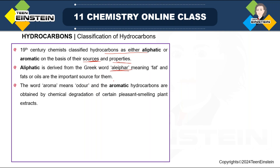Aliphatic is derived from the Greek word 'aliphar,' which means fat, and fat or oil molecules are the source for aliphatic hydrocarbons. For aromatic compounds, the word 'aroma' means odor, and aromatic hydrocarbons are obtained by chemical degradation of certain pleasant-smelling plant extracts — leaves, flowers, or fruit. They have a special aroma, and that is why this class of compounds is called aromatic.